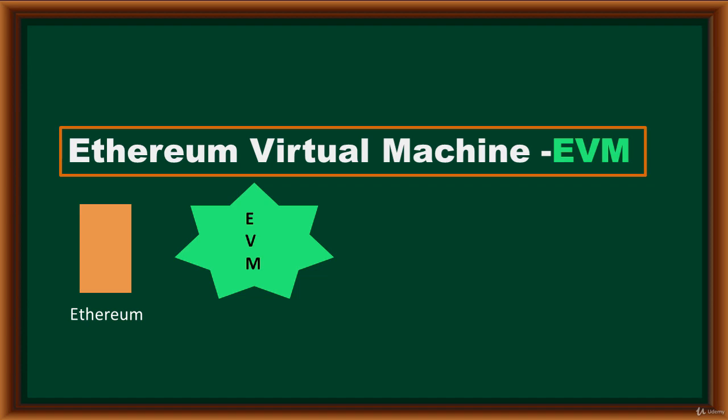This is where all your smart contracts are executed. It is completely isolated and has no access to file systems or processes. So each node in the system runs the EVM. That way it can maintain a consensus across the network.